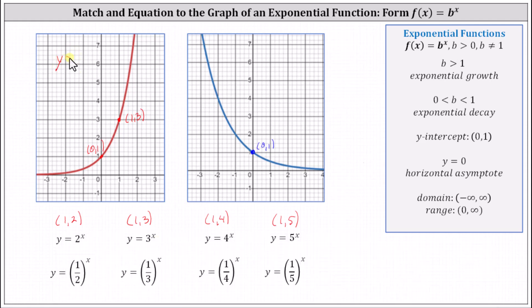Let's label the red graph with the equation y equals three to the power of x. Now let's focus on the blue graph and find a second point. When x is one, the y value appears to be one-half, giving the ordered pair one comma one-half. For y equals one-half to the power of x, when x is one, y equals one-half, which does seem to match our graph.